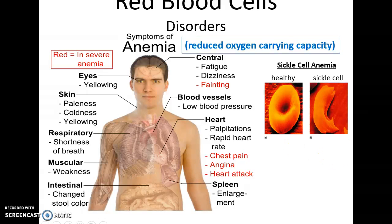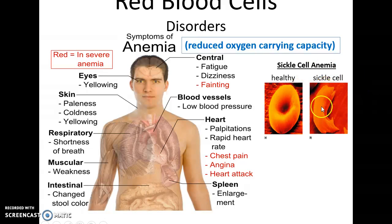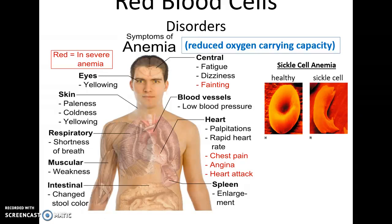People with sickle cell anemia have a genetic disorder where their red blood cells are malformed into something that looks like a sickle. Those red blood cells often rupture, and that's what causes many of the symptoms.